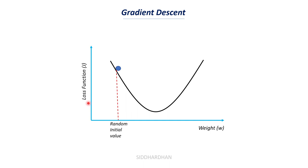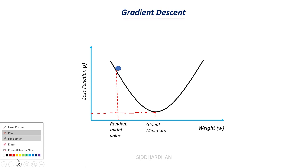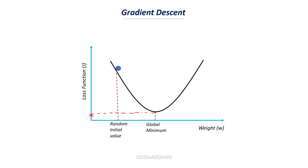Our goal is to reach a point where the loss function value is minimum. In this curve, there is a point where the loss function value is minimum — we call this the global minimum. At the global minimum, for a particular weight value, the loss function is minimum, meaning the model is highly accurate. Our goal is to start from the initial point and change the weight value gradually until we reach this global minimum.